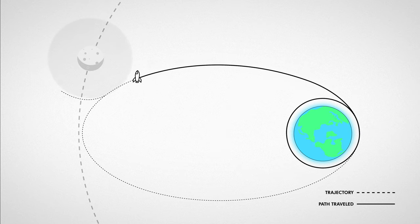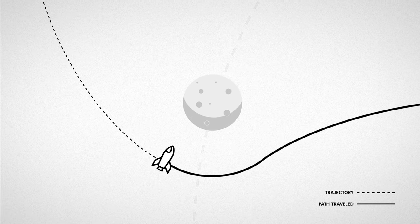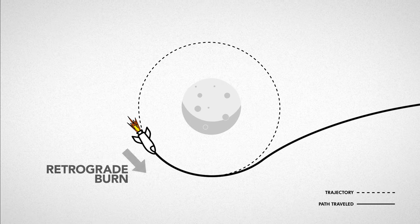Now even though the Moon's gravity is starting to pull us in, we still need to flip around and burn our engines in reverse to slow down and get into orbit.